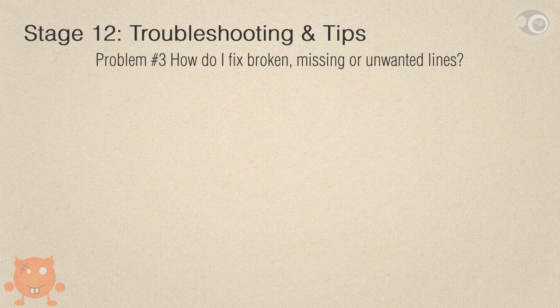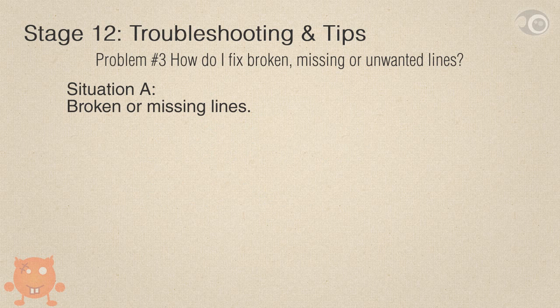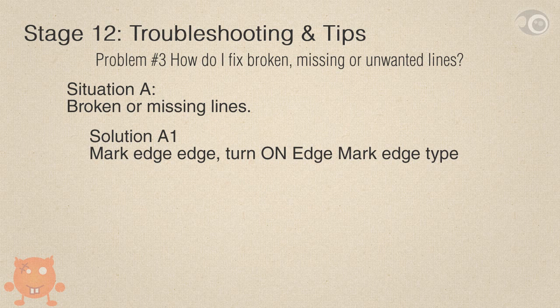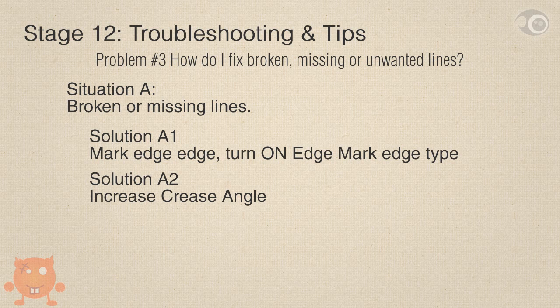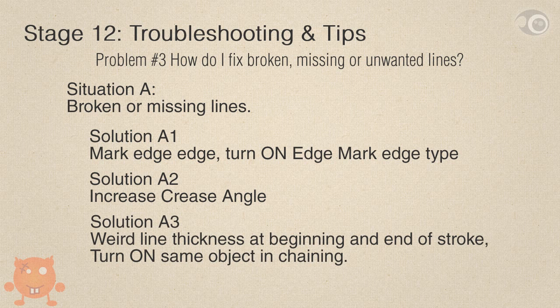Problem 3: how do I fix broken, missing, or unwanted lines? Solution A1 for broken or missing lines — this is obvious: you mark the edge on the surface and turn on edge mark. It's worth repeating: edge mark is your best friend. Solution A2: increase the crease angle to include more angles for the crease to draw lines. Solution A3: weird line thickness at the beginning and edge of the stroke — solve it by turning on the same object chaining.